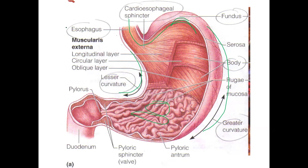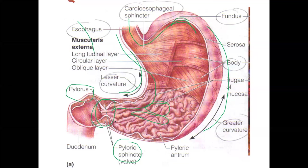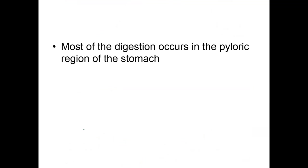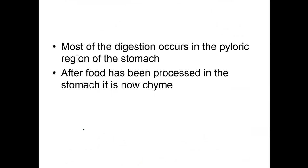Toward the distal end of the stomach is the pyloric sphincter in the pylorus area. The food, now called chyme, sits inside your stomach. The pyloric sphincter stays closed and only allows a certain amount of chyme to enter the small intestine at a time. Once the stomach blends the food down, it is now called chyme.